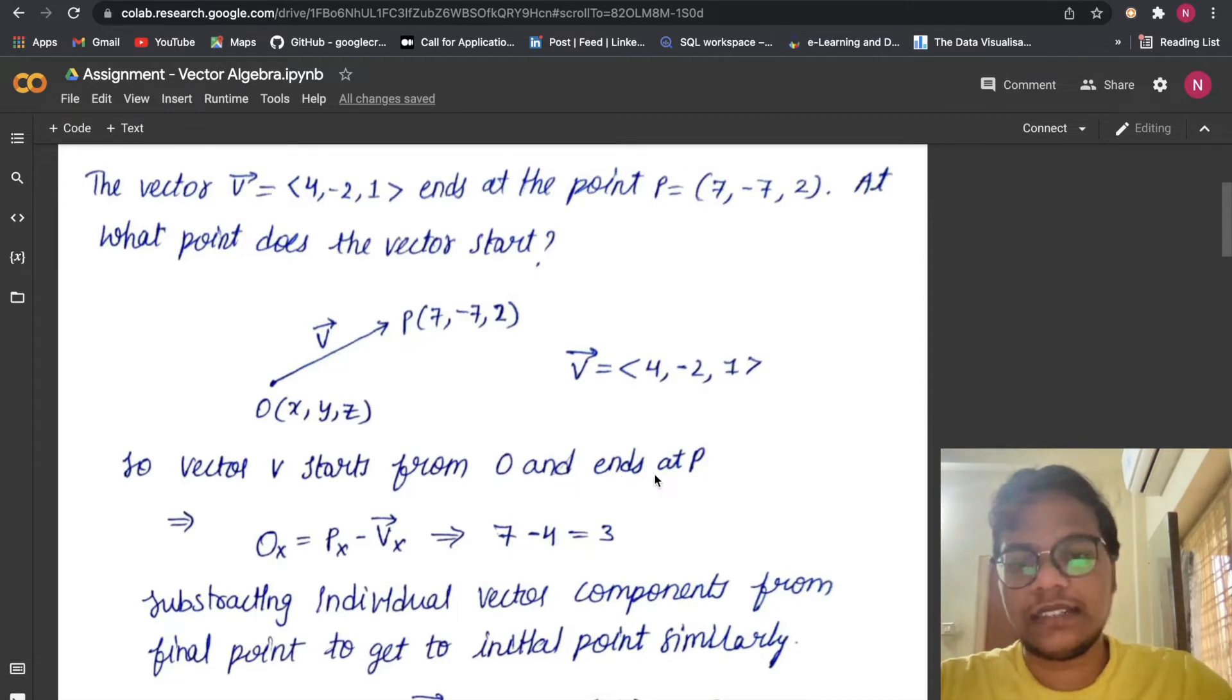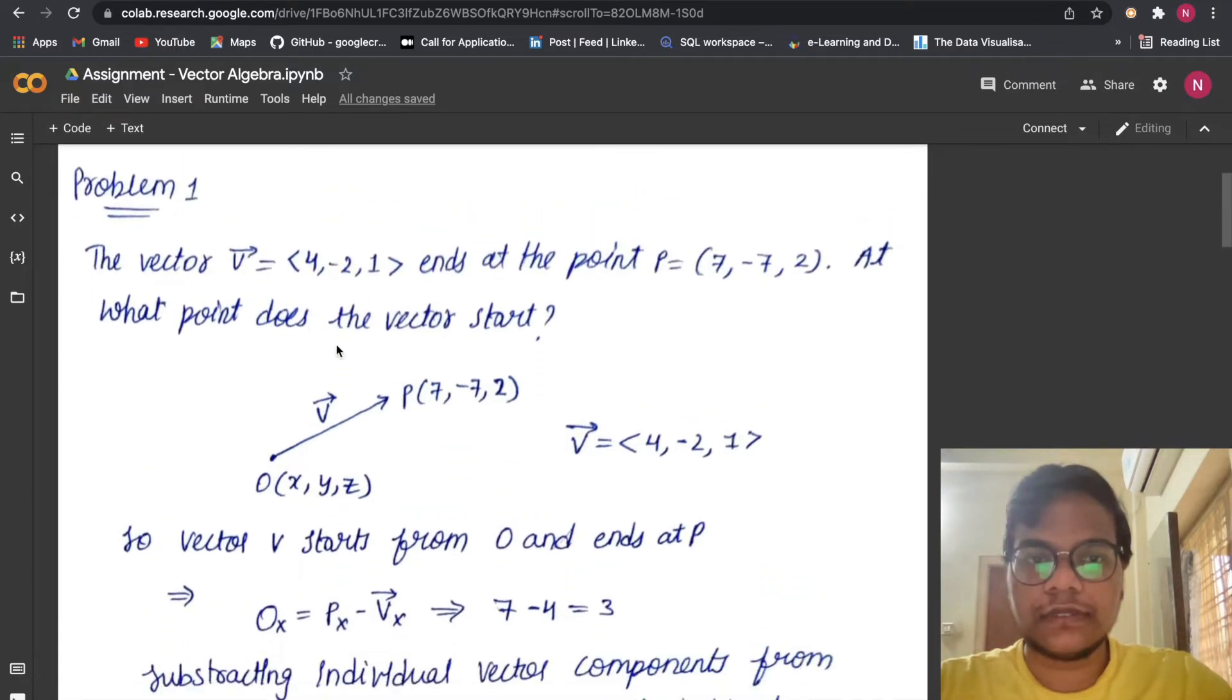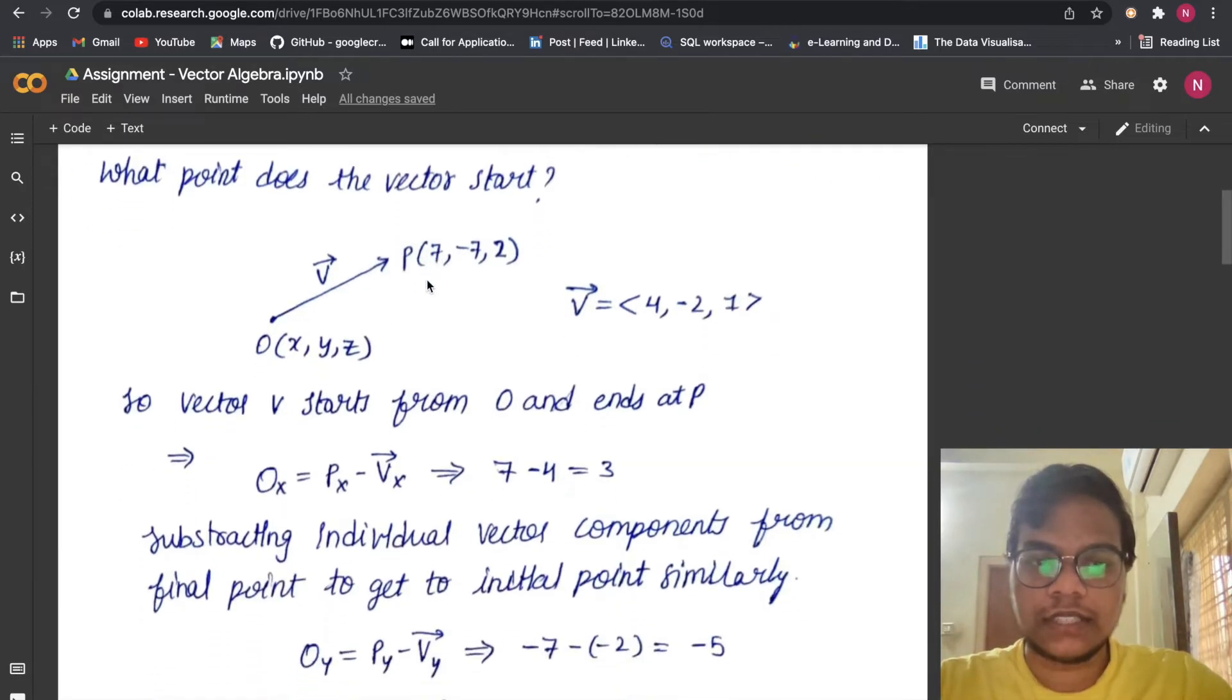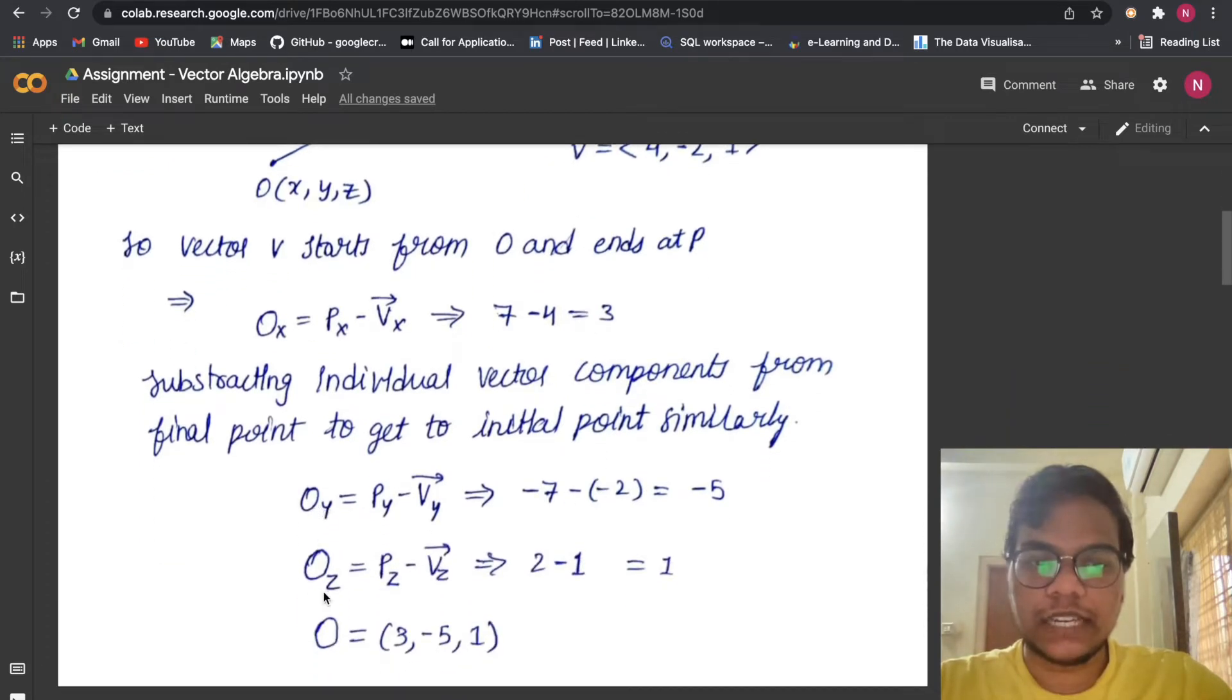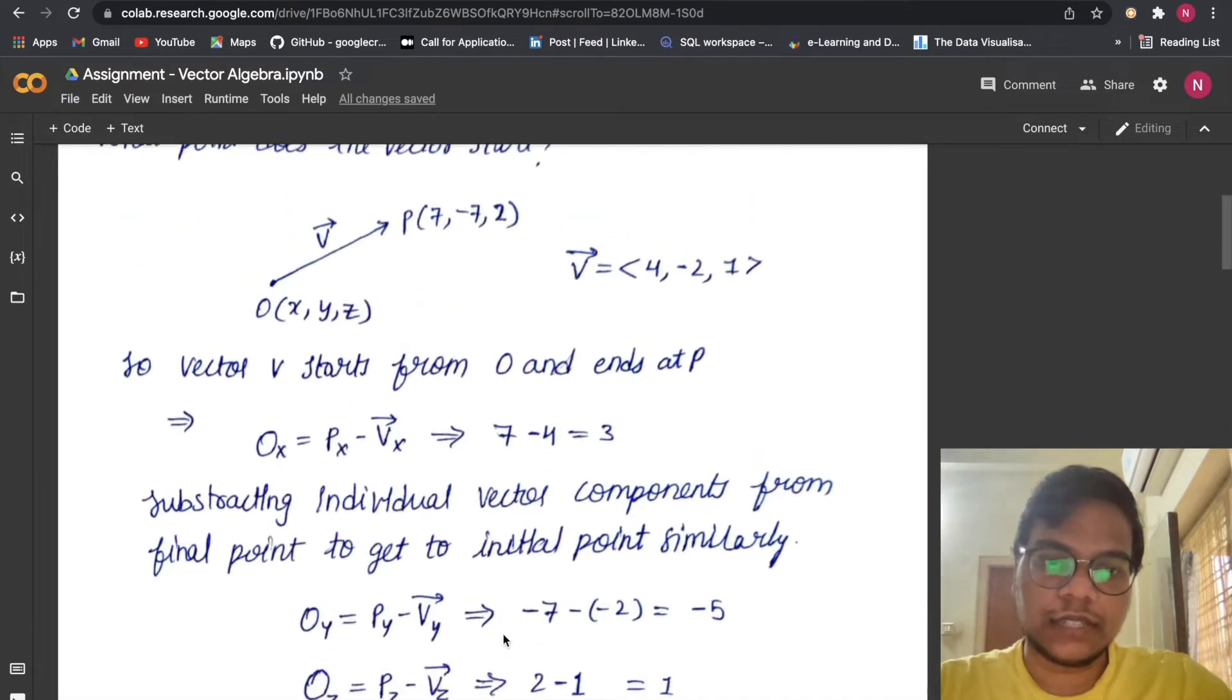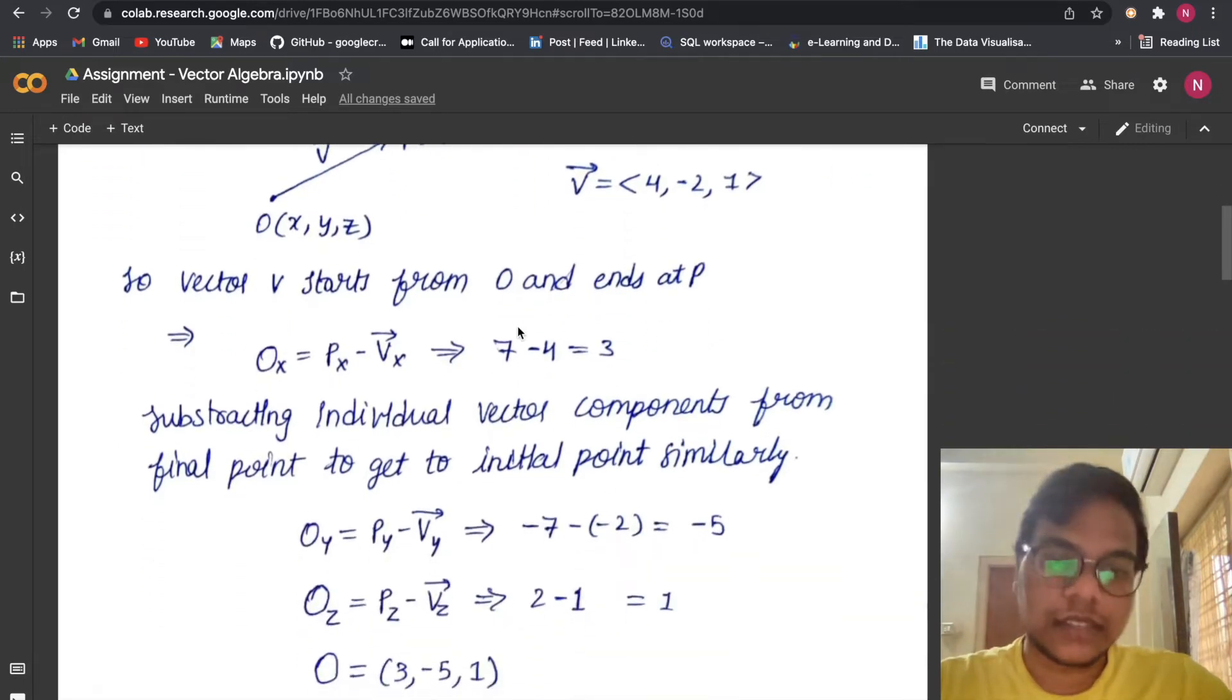...O and ends at P. That's why what I'm doing: Ox = Px - v̄x. So we have values for vector v̄, right? 4, -2, 1. So what we have to do is just subtract: 7 - 4, so I got 3. In the similar manner, I have to find Oy and Oz also, so I got -5 and 1. So values of O are (3, -5, 1). At O it starts and it reaches to P.